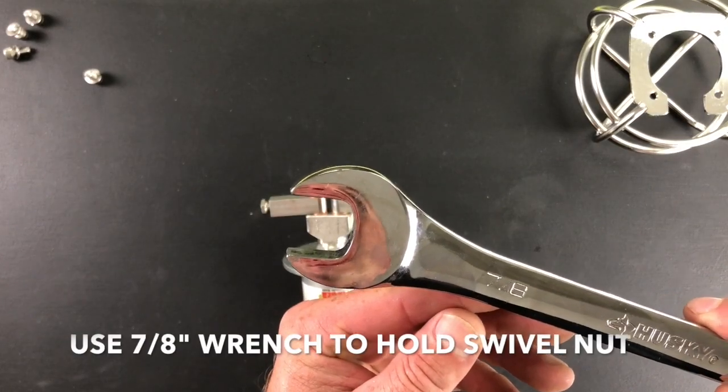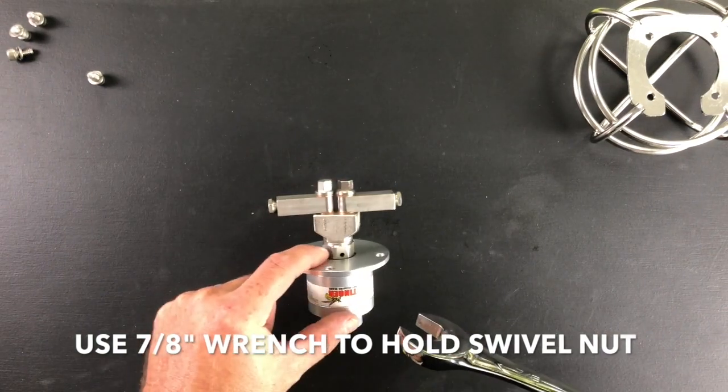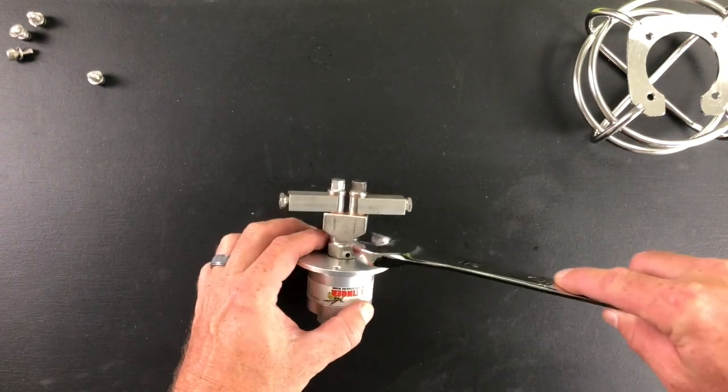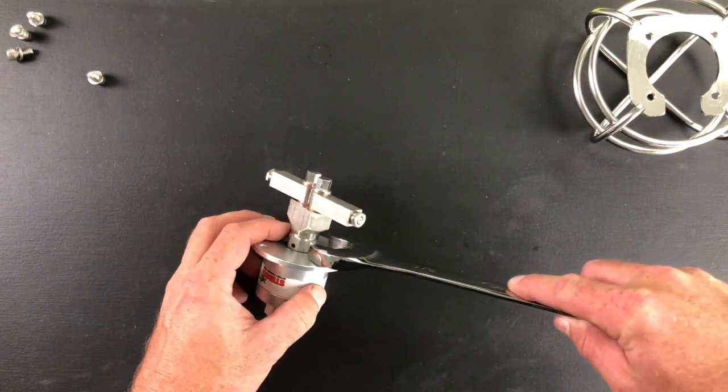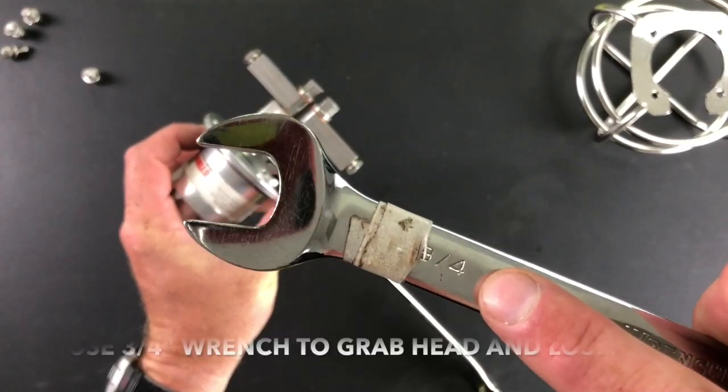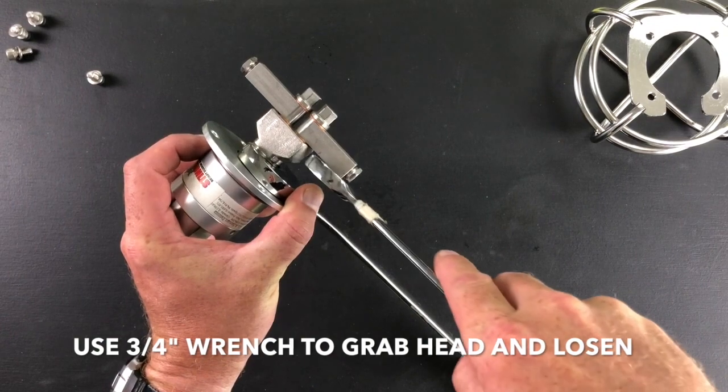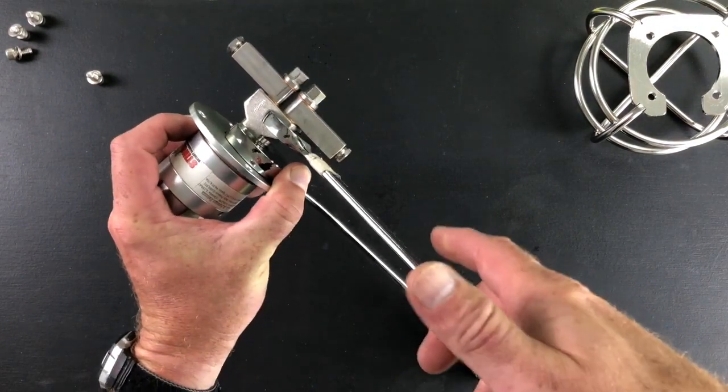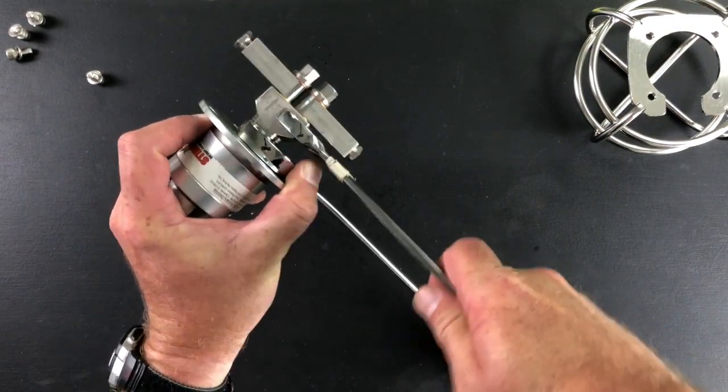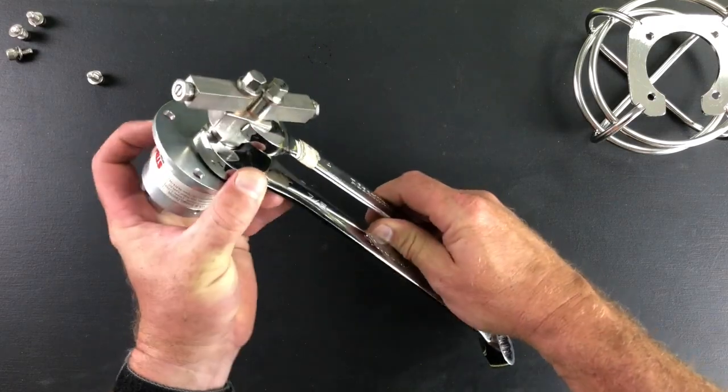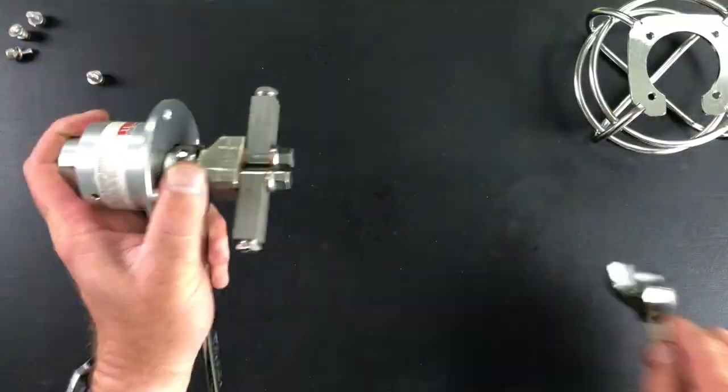Step two is removal of the swivel head. Use a 7-inch wrench to hold the swivel nut securely in place. Use a 3/4 inch wrench to place on the head and loosen. Note once you break it loose, you can easily spin it off the rest of the way by hand.